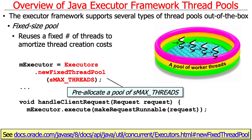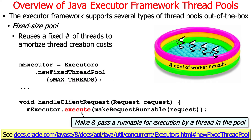We have some number of threads — let's call it S max threads. We pre-allocate a pool of threads, and then when a request comes in from a client, we make a new Runnable to handle that request and execute it. What that does is take that Runnable, queue it in the pool, and run it when there's a thread available.